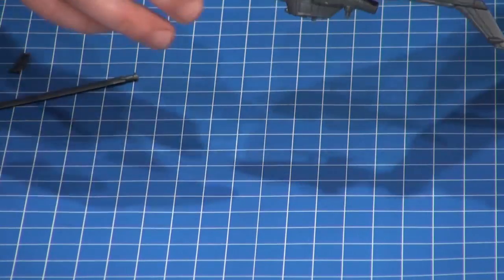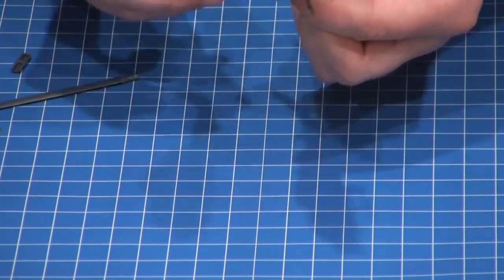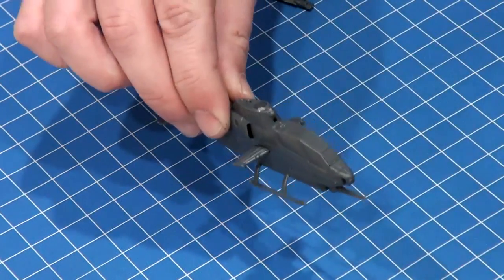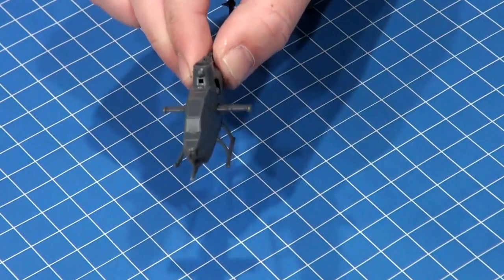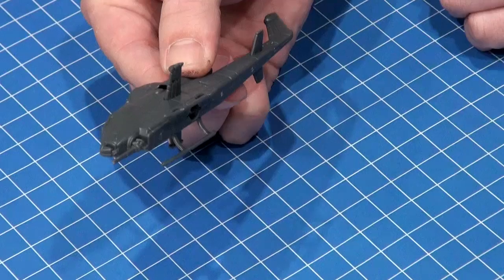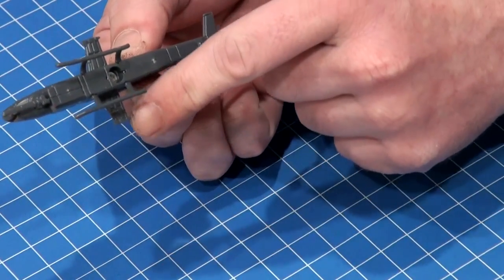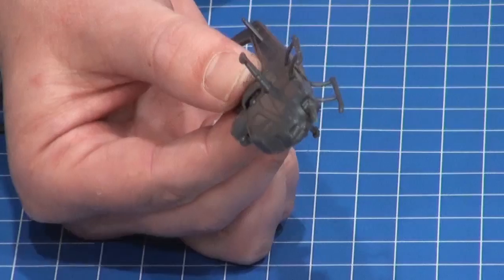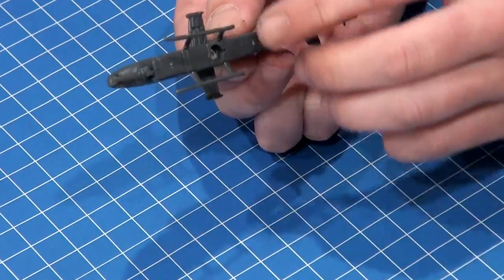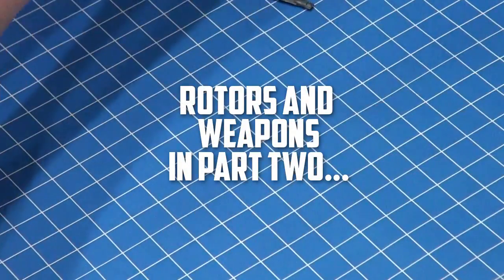So what I'm going to do now is just set the helicopter model itself aside and start to assemble the weapons. Now at this stage a helpful tip or at least a tip that I tend to go with is that for something with this many different angles, I'll tend to leave the weapons off. They would attach to these points under the wings. You'll see them clearly marked. I tend to leave them off until after painting. It just makes getting into these little nooks and crannies a little bit easier.